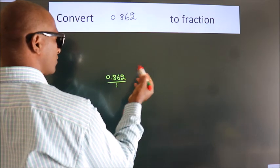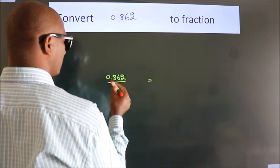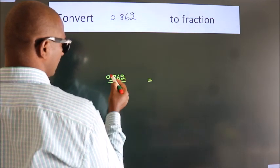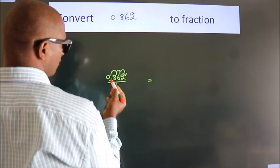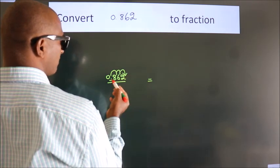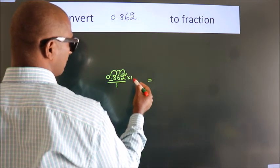To convert this to fraction, for that we have to move this decimal after 1, 2, 3 numbers. To move this decimal after 3 numbers, for that we have to multiply it with 1000.